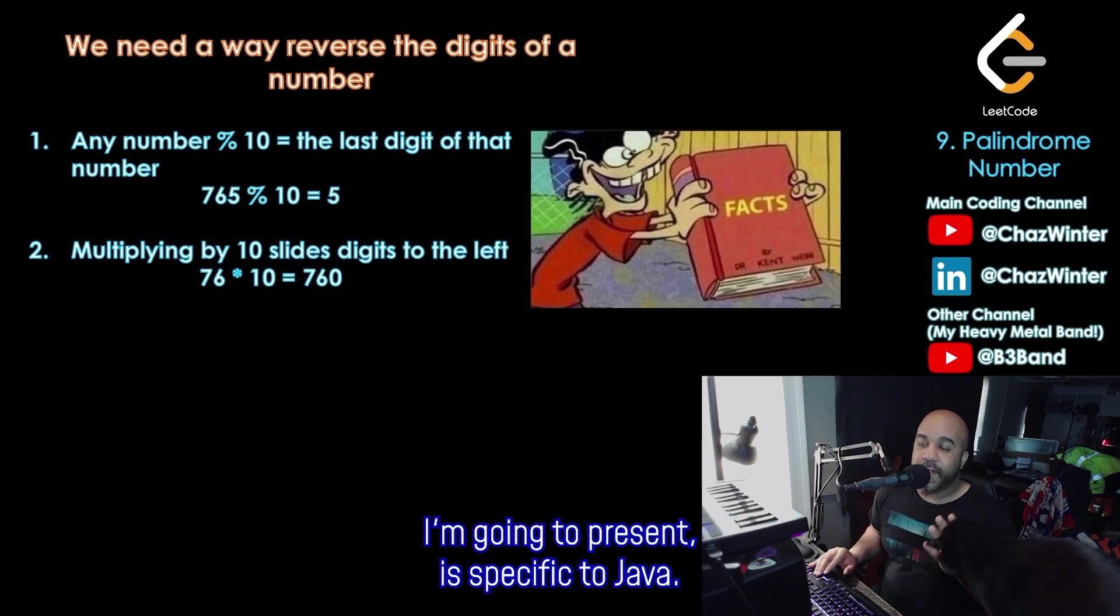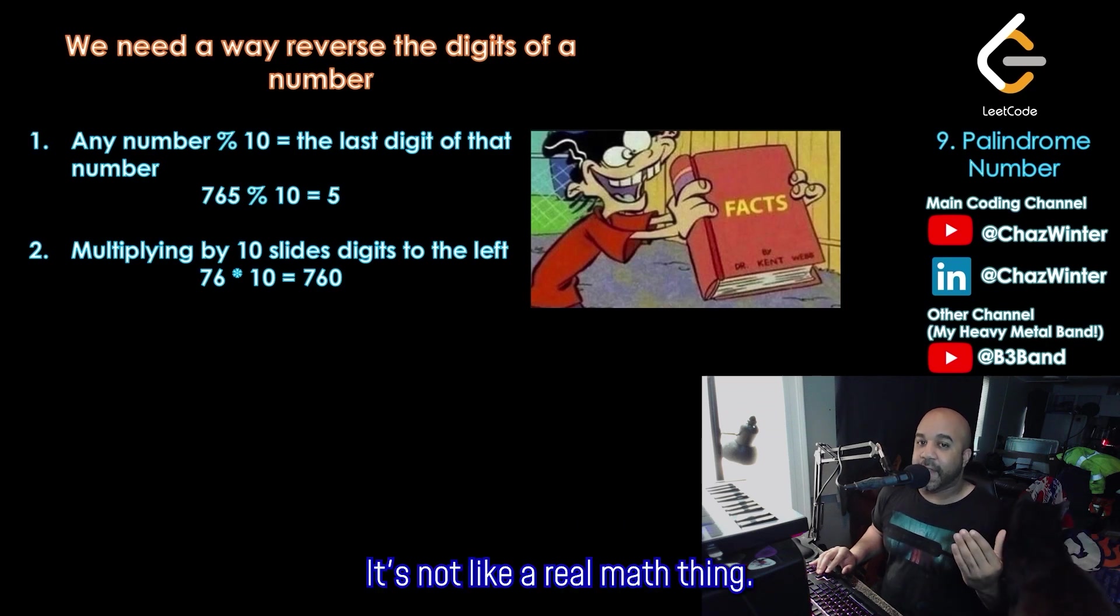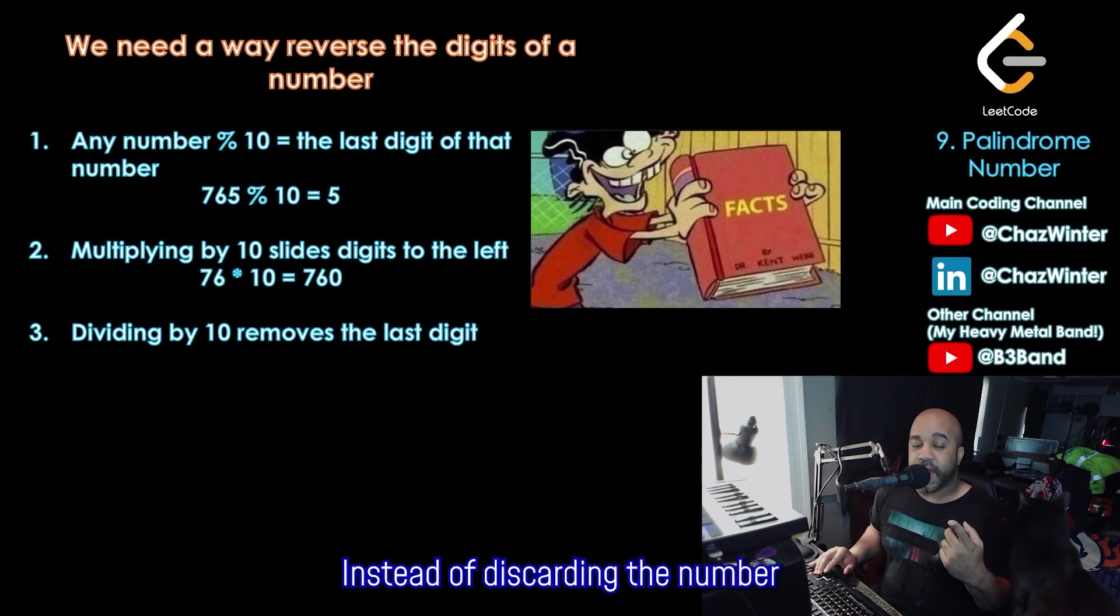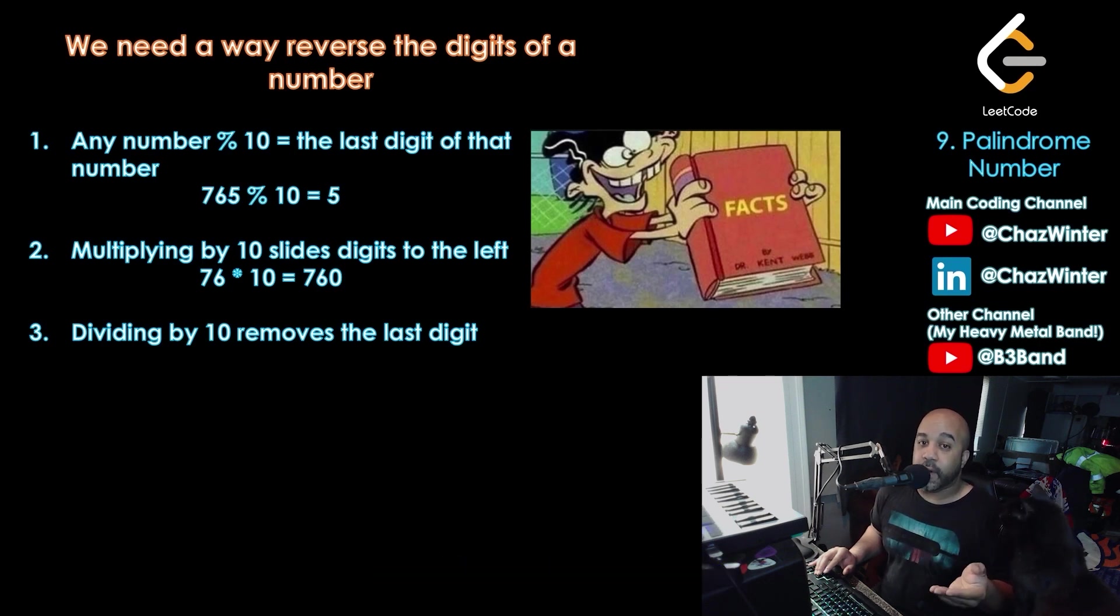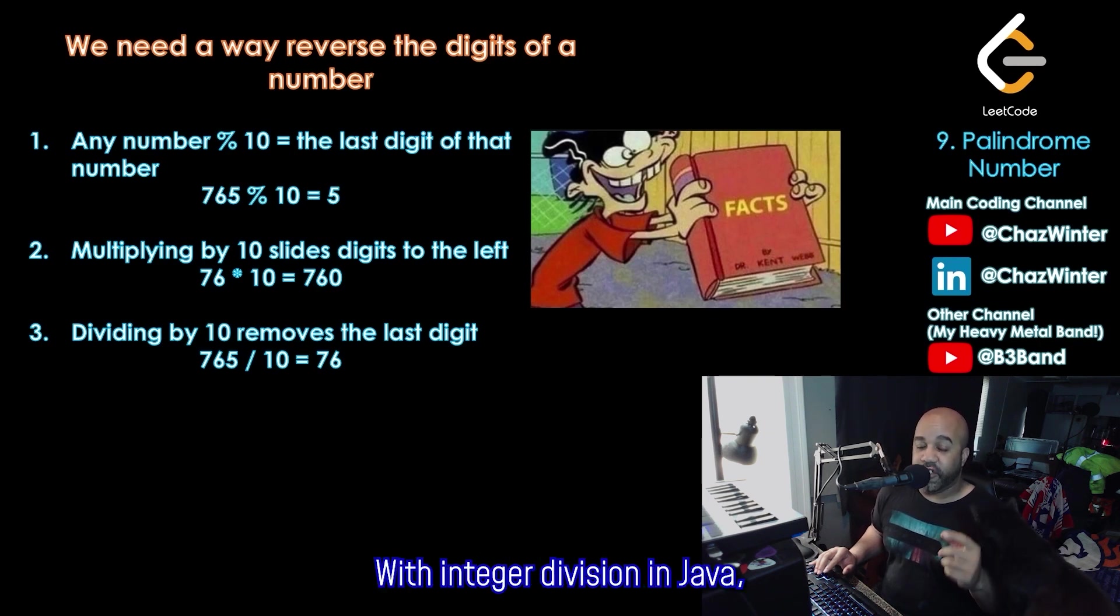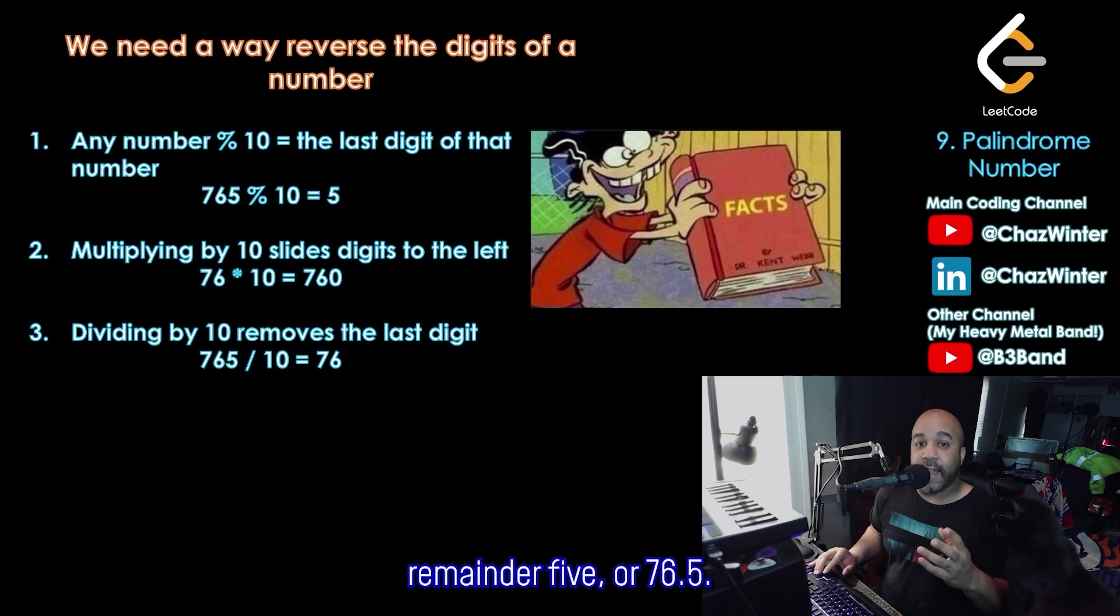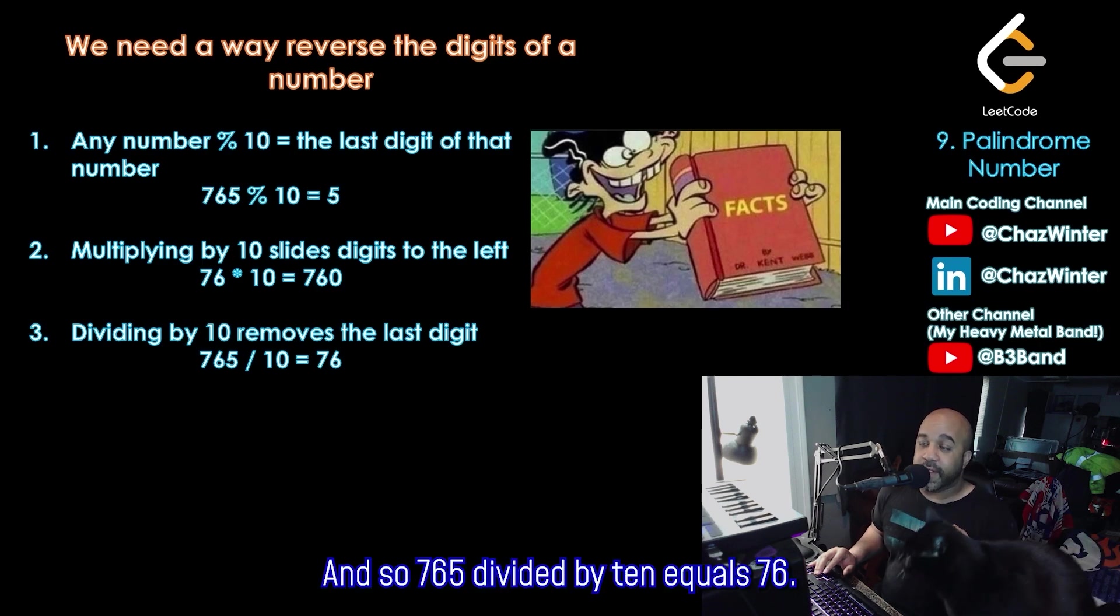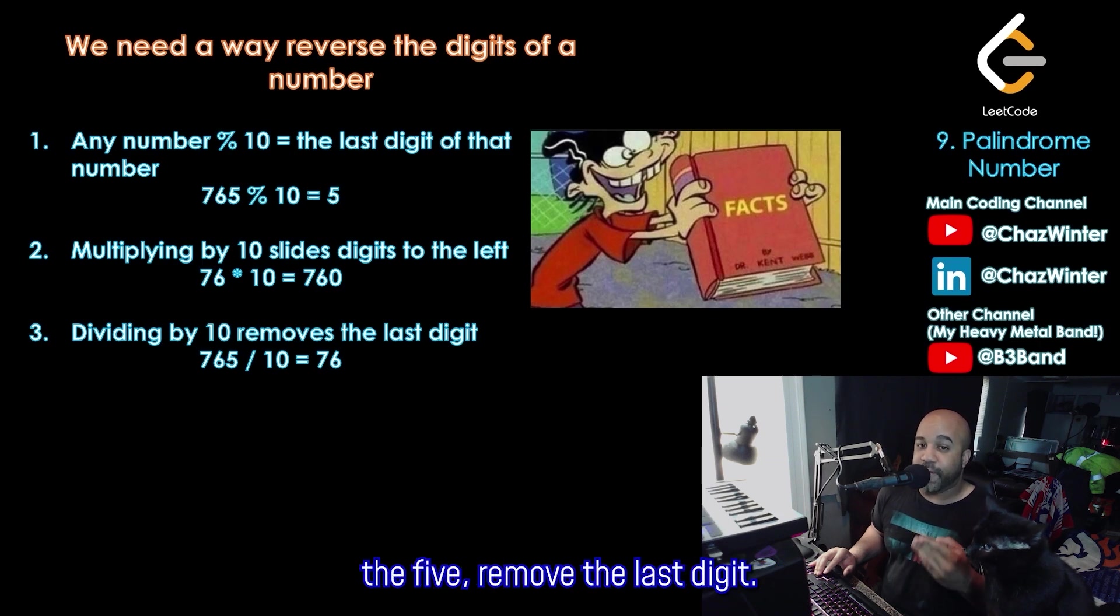And then the last thing I'm going to present, it's specific to Java. It's not like a real math thing, but dividing by 10 removes the last digit of a number. And that's because in Java with integer division, it's sort of the opposite of the modulo operator. Instead of discarding the number and keeping the remainder, it keeps the number and discards the remainder. So my example here is 765 divided by 10 with integer division in Java. You don't get 76 remainder 5 or 76.5. That remainder is discarded in Java because we're dealing with integers. And so 765 divided by 10 equals 76. So basically all you did was remove the 5, remove the last digit.